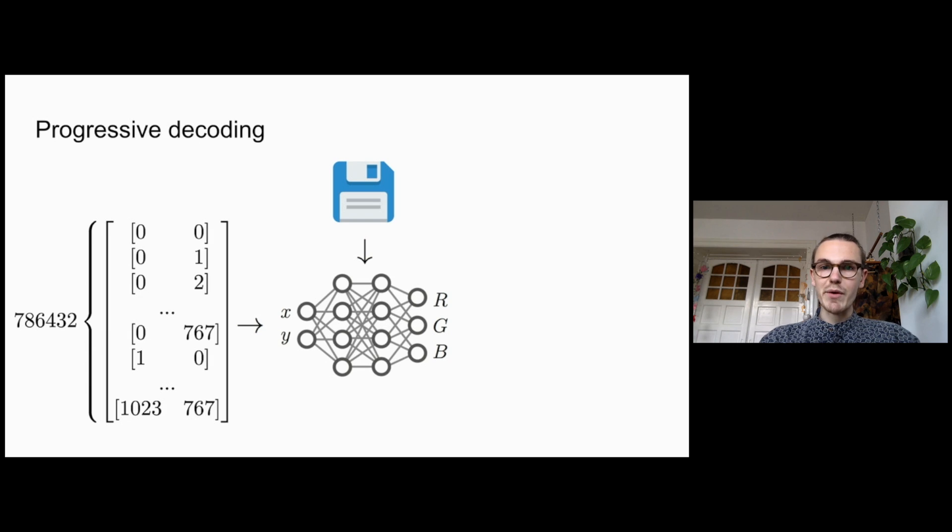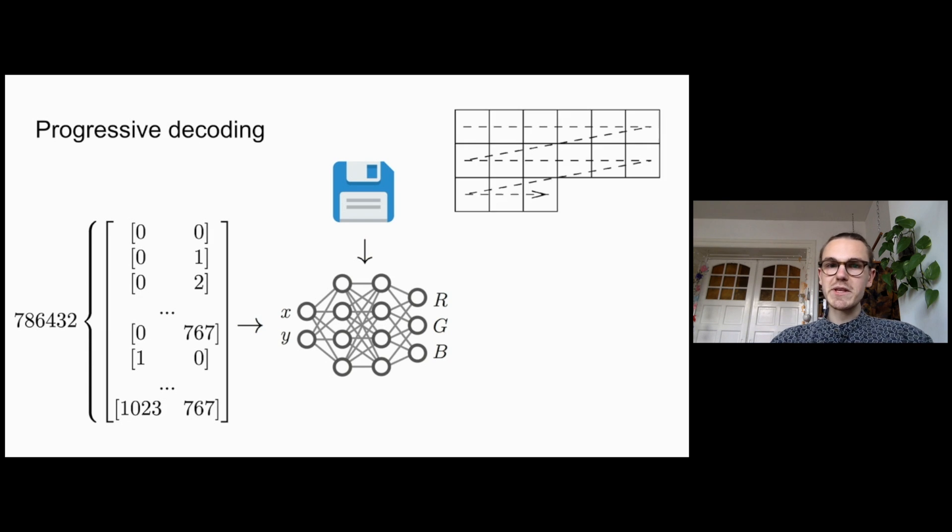Secondly, our method allows for progressive decoding. Normally, we would decode an image by evaluating the neural network on a tensor of every pixel location for a given resolution. This process is embarrassingly parallel, and so if we have access to a GPU, this can be performed very quickly. However, if we are considering memory-constrained or compute-constrained devices which cannot perform such massively parallel computation, then we might want to consider progressive decoding.